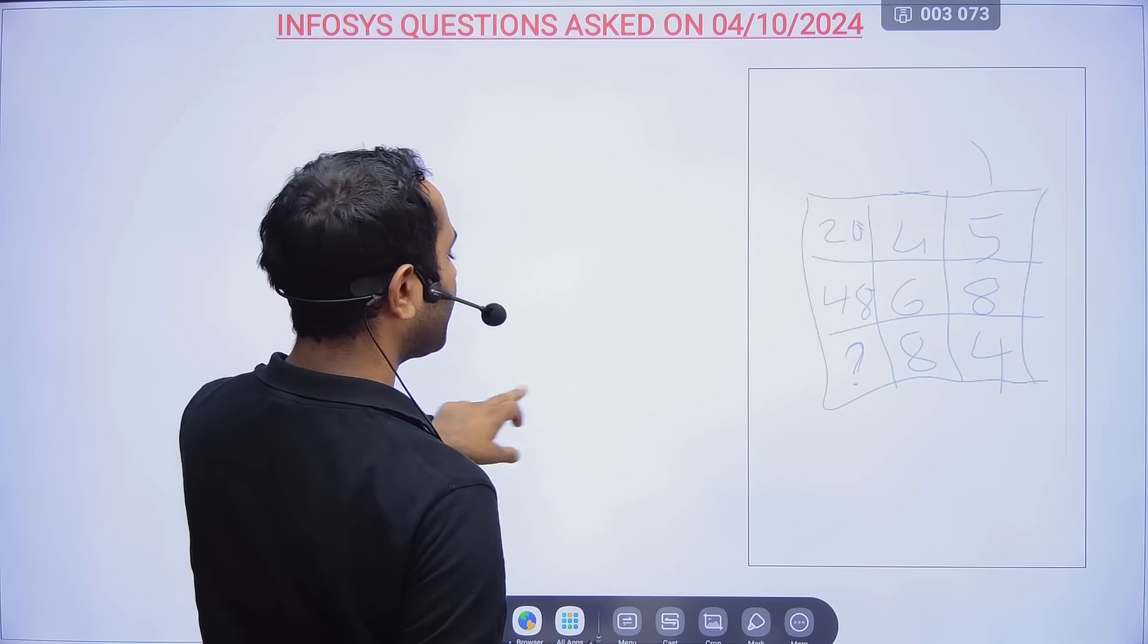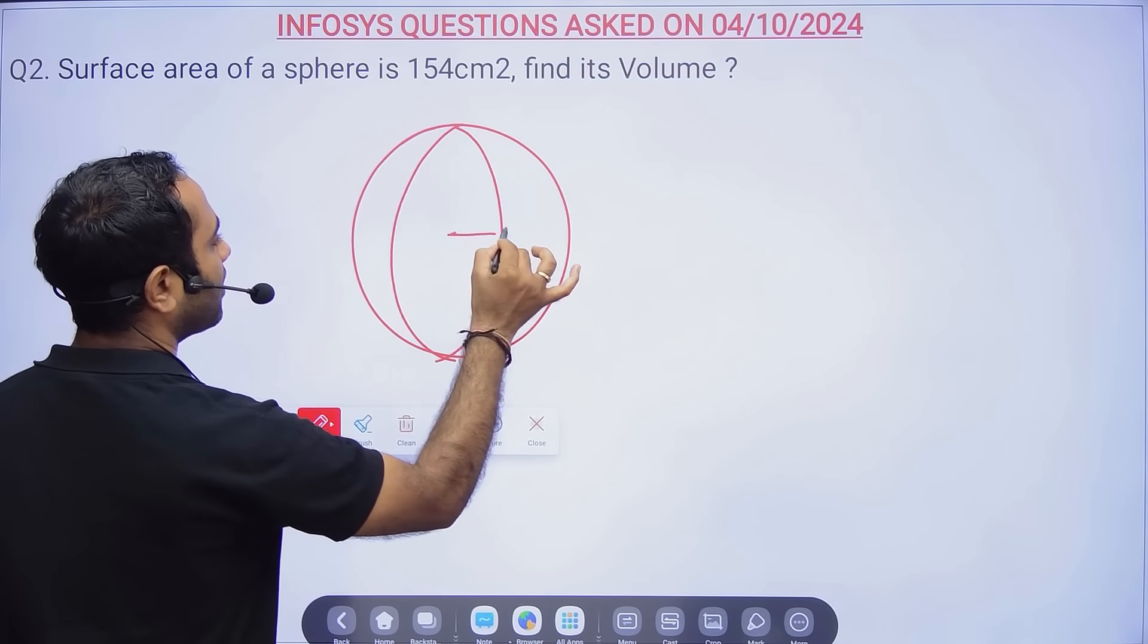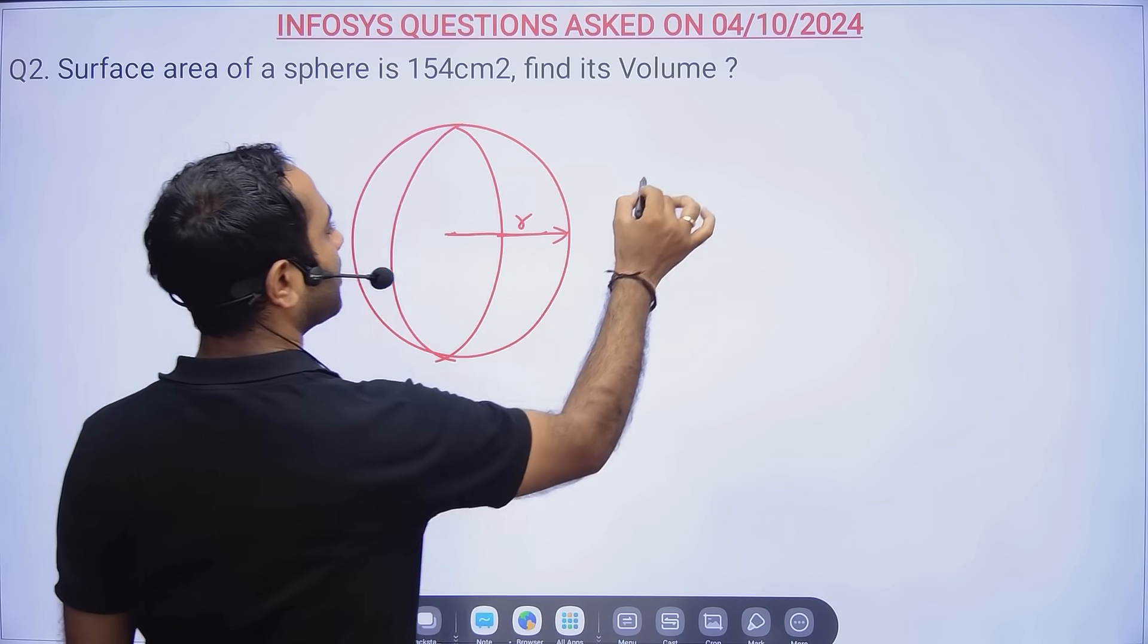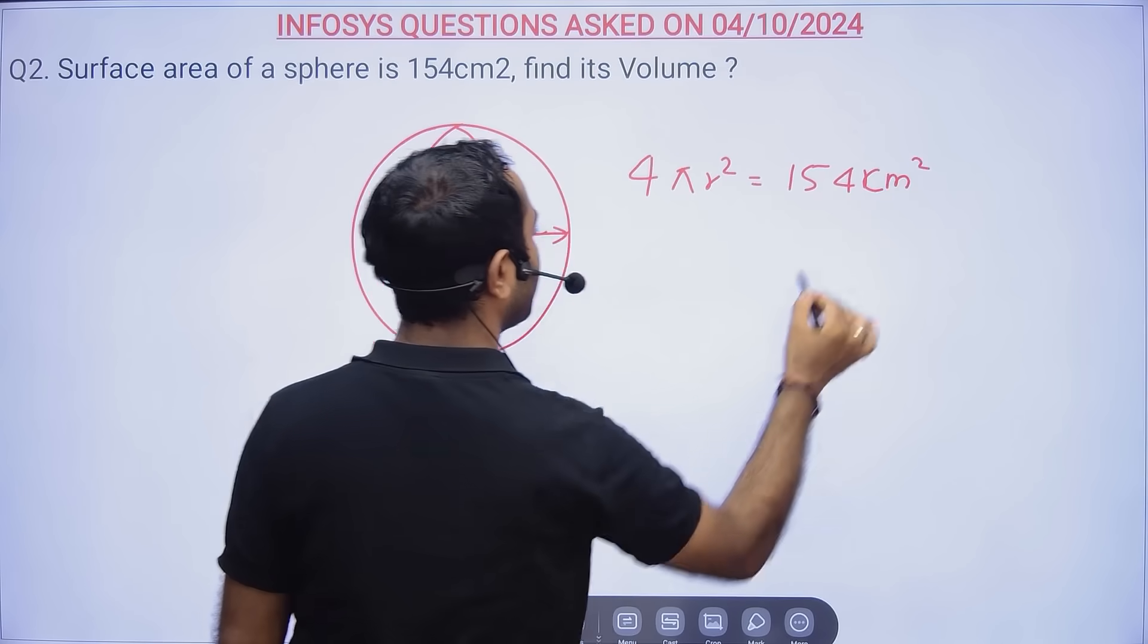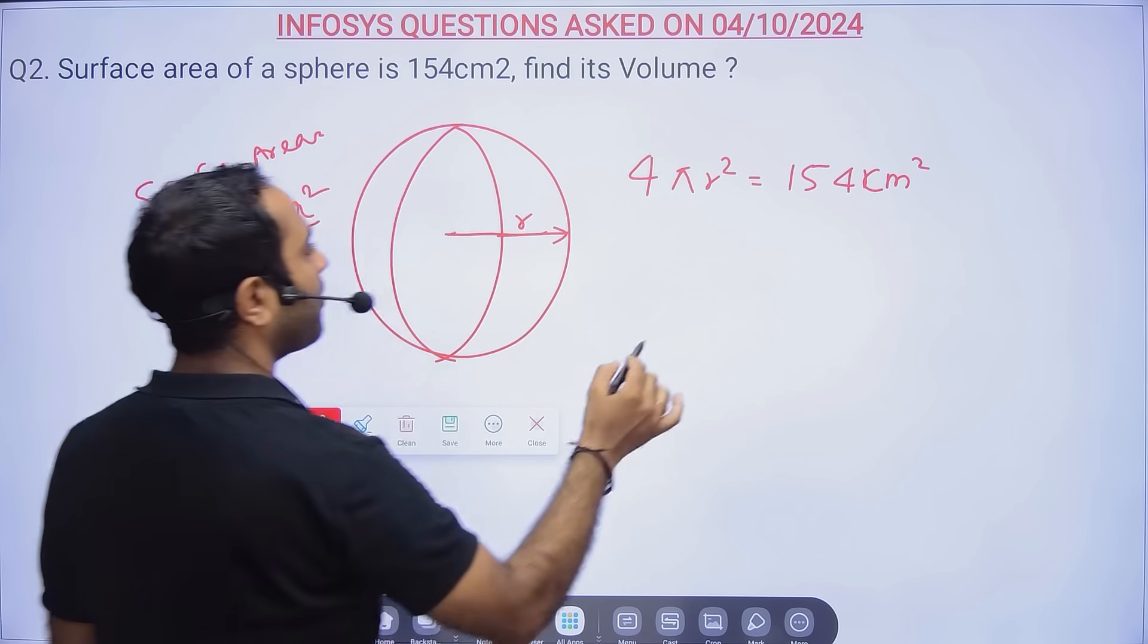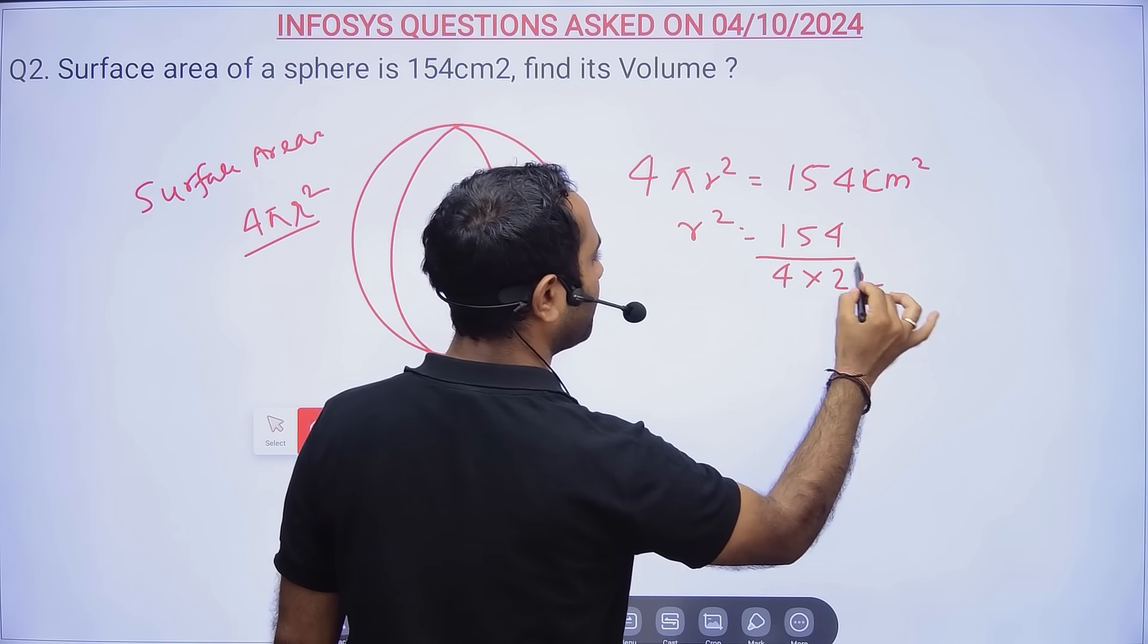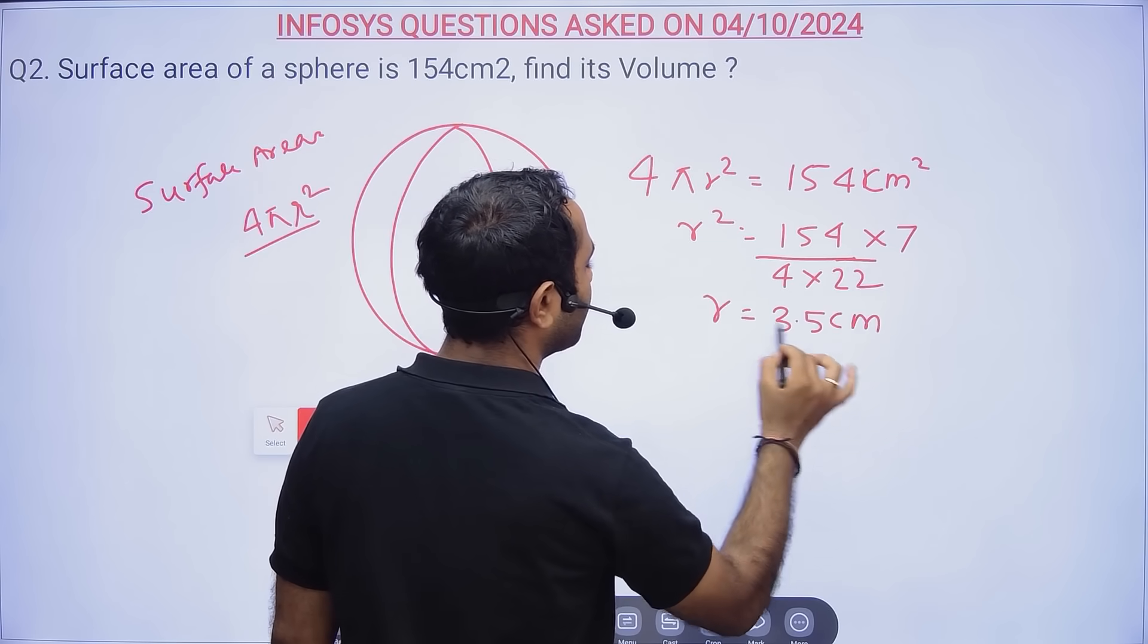Next we have a question from surface area. A sphere's surface area is 154 cm². This is your sphere with radius r. Surface area equals 4πr². From here you can calculate r² = 154 ÷ (4π). If you calculate, r will be 3.5 cm.